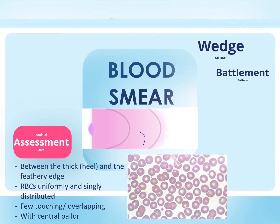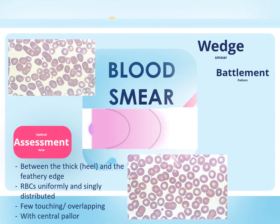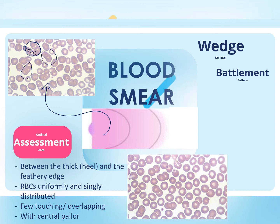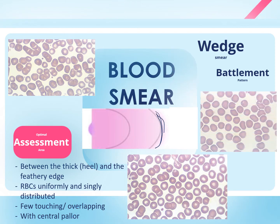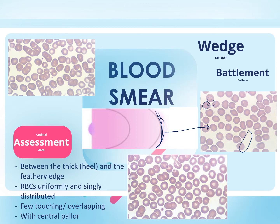Another characteristic of a good area is that the red blood cells still contain the central pallor and their shape is intact. In the thick part of the smear, we cannot perform a differential count because red blood cells pile up on top of each other forming rouleaux, causing distortions on cells including white blood cells, making classification difficult and evaluation inaccurate. At the feathery edge, the film has holes and RBCs appear flat, large, and distorted without the central pallor.